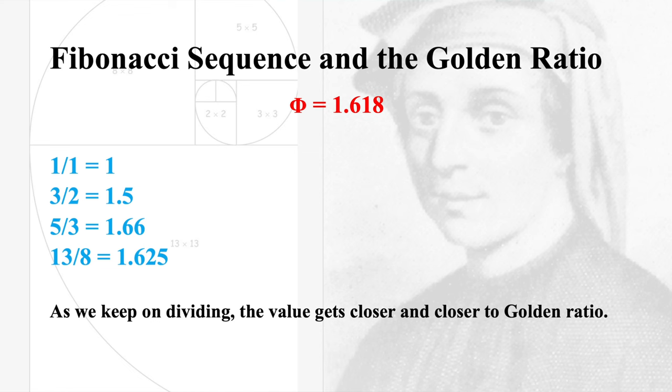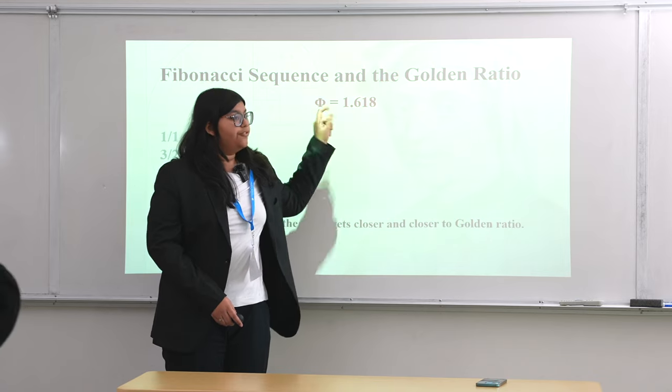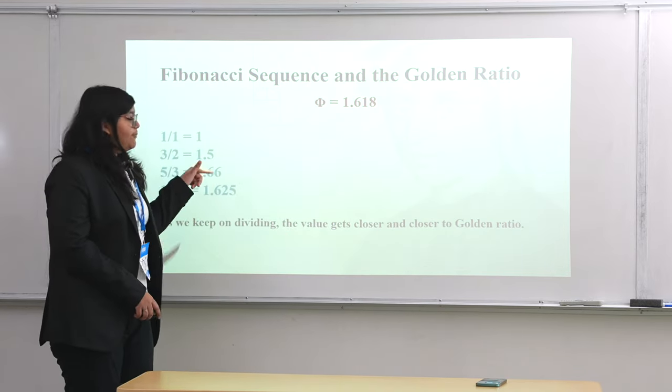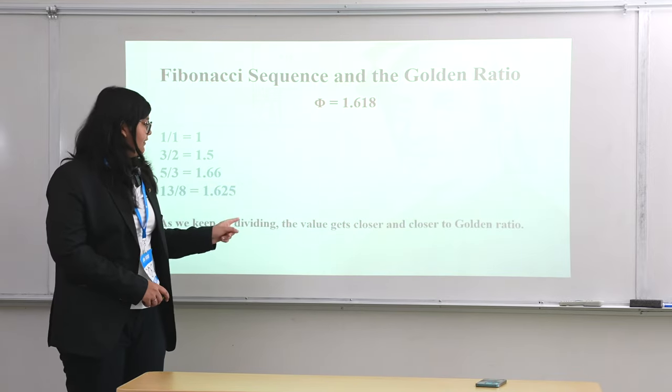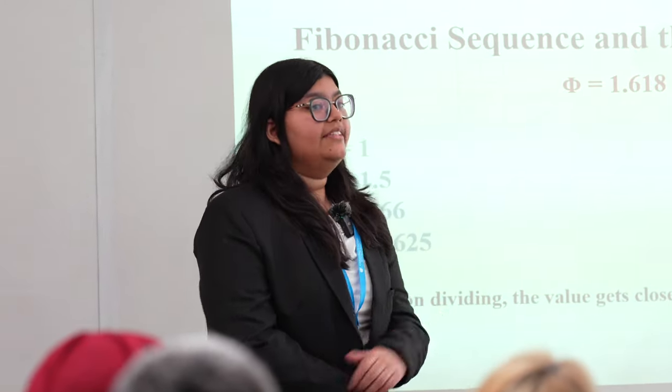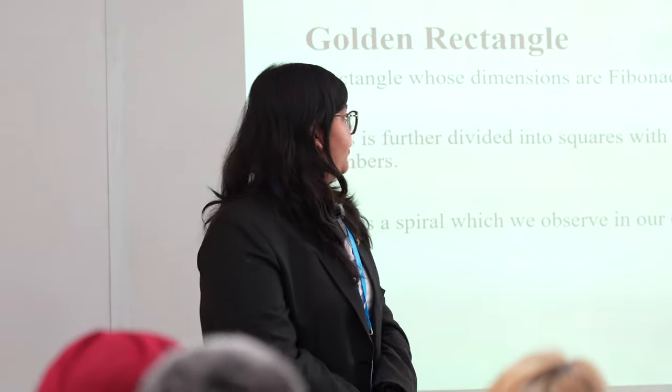Now, Fibonacci sequence and the golden ratio. Whenever we divide two numbers, and when the answer comes out to be 1.618, that is called the golden ratio, which is represented by the Greek letter phi. And as we keep on dividing Fibonacci numbers, the answer gets closer and closer to golden ratio. That is how we know the Fibonacci sequence follows the golden ratio.